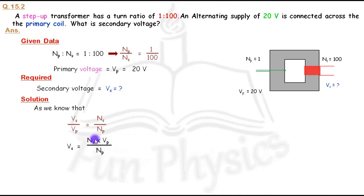Now we put in the values. Ns is 100, the primary coil number of turns is 1, and the primary voltage is 20. So Vs equals 100 times 20 over 1. When we solve this, we get the secondary voltage which is 2000 volts.